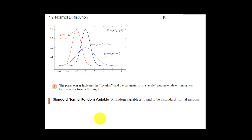The parameter μ is a location parameter indicating where the peak of the distribution is. The parameter σ — the standard deviation — is a scale parameter determining how spread out the distribution is, essentially controlling the range of x.